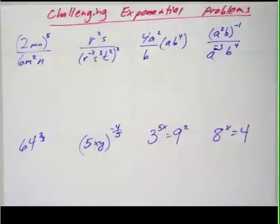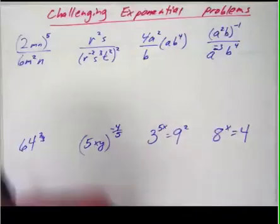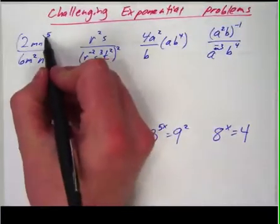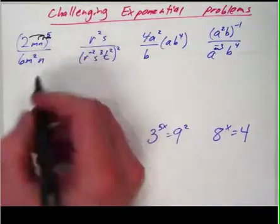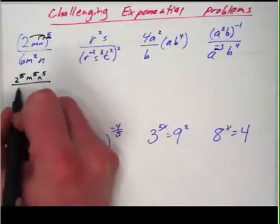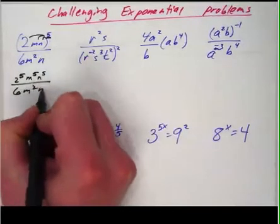Now I'm going to go through and work them out so you can actually see how we got these. I'm going to move kind of quickly because I expect you to know a little bit about these properties. So right here this is to the fifth power so I'm going to give this fifth power to everything that's in the parentheses. So that's 2 to the fifth m to the fifth n to the fifth all over 6 m to the second n.